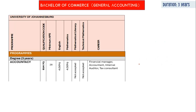For the extended program at CPUT, you only need a code 3 for accounting. Now let's look at the degree. Remember, for a degree you're going to need pure maths — you can't do a degree with math select. If you want to do a degree in accounting, it also takes three years. You need an AP score of 28, code 4 for English, and code 4 for mathematics. Math select is not accepted.